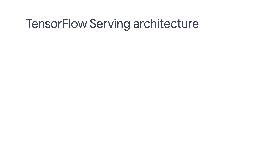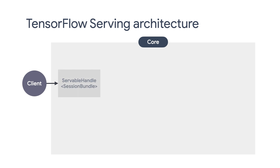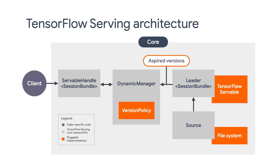Now let's take a quick look at the overall architecture of TF Serving. At a high level, a TensorFlow saved model is a kind of servable managed by the loader. Inside TF Serving core, the dynamic manager determines when the loader should load the servable, in which case the servable handle will be used to perform predictions based on incoming requests from the client. You don't necessarily need to understand all the internal details to use TF Serving effectively, but this will be useful if you want to create a new servable to serve non-TensorFlow models, which we will discuss in a future episode.